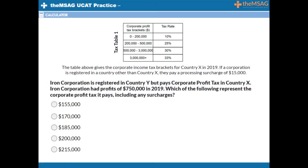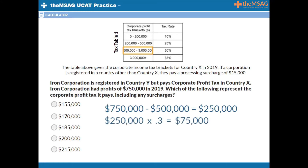These questions are a bit tougher but quick to do if you have been following this video closely. For question 3, profits of $750,000 fall into the $500,000 to $3 million bracket. By how much? $750,000 minus the lower limit of $500,000 gives $250,000. This $250,000 is taxed at 30%, meaning $75,000 in tax for this portion of the profit.